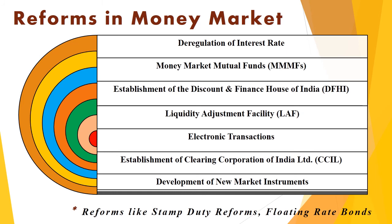The Discount and Finance House of India played a very important role in stabilizing the Indian money market. The next reform is the Liquidity Adjustment Facility, through which the RBI remains in the money market on the basis of repo transactions, adjusting liquidity through absorption or injection of financial resources. Electronic transactions were also introduced to impart transparency and efficiency, allowing the RBI to monitor the functioning of the money market. The Clearing Corporation of India Limited was set up in 2001 to clear all transactions in government securities.